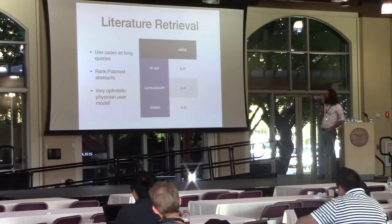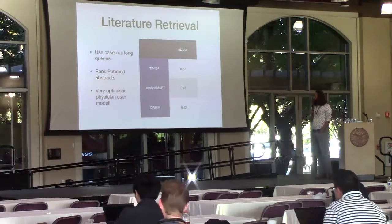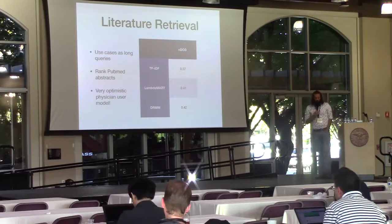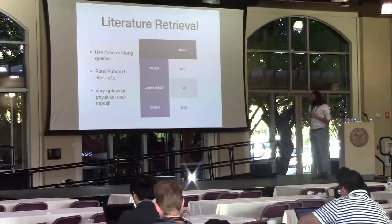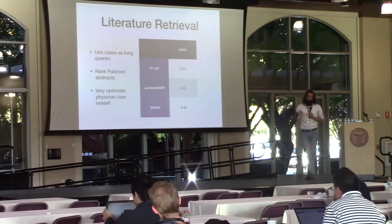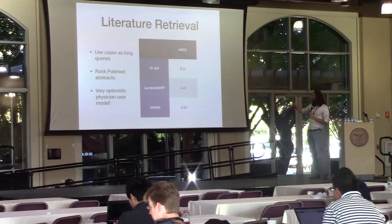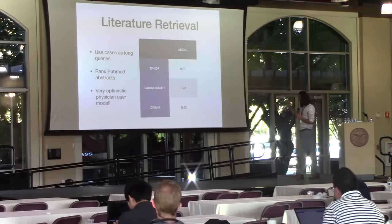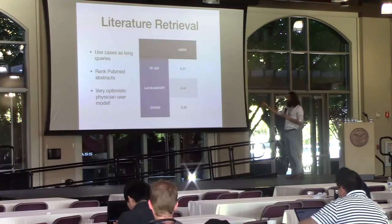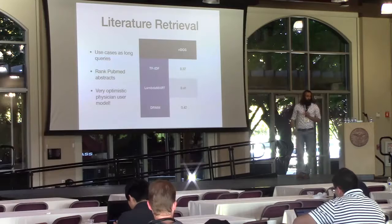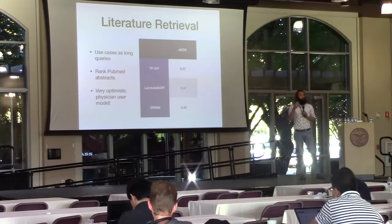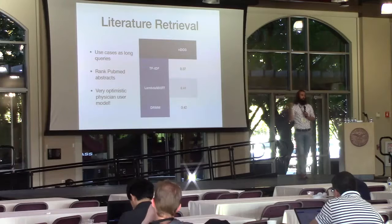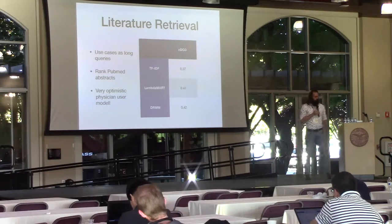There's also a retrieval experiment where we mimic the same setting as the TREC clinical decision support track, but with these queries. The patient case is your extremely long query, and if you pump that into a TF-IDF model, a language model, or a neural network model, you get relatively good performance scores. But keep in mind this is a very optimistic model — it assumes a physician reading a document mentioning a symptom would pick up on the correct diagnosis, which in truth will probably not be quite as sensitive.